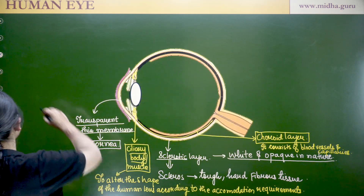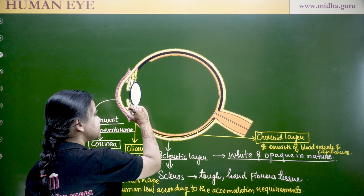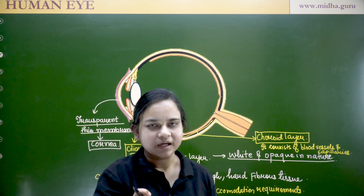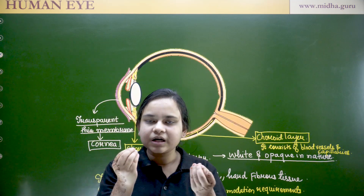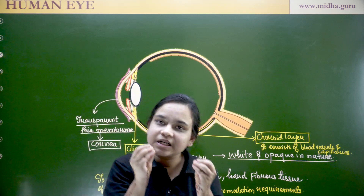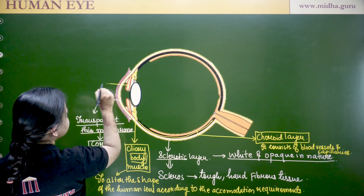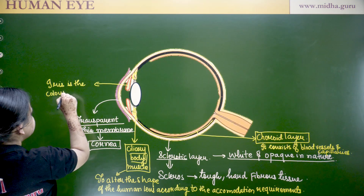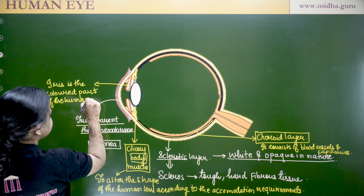From the ciliary body, another structure emerges called the iris. The iris is the colored portion of our eye. When we see someone with a blue eye or brown eye, that color is reflected because of the iris. So the iris is the colored part of the human eye.